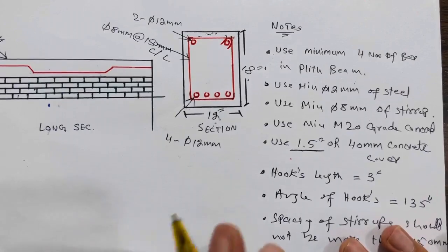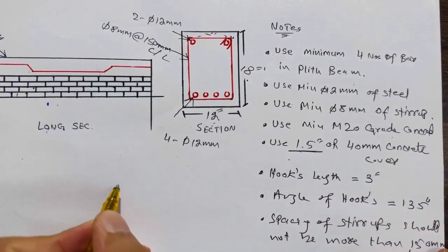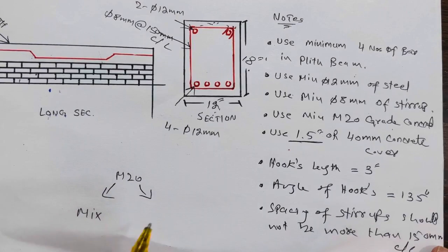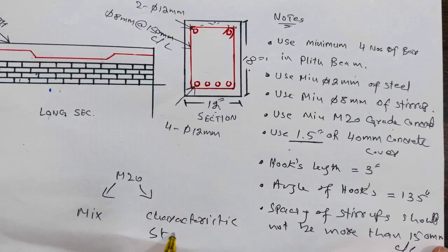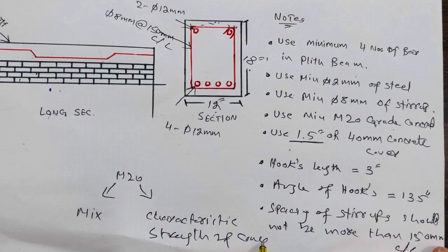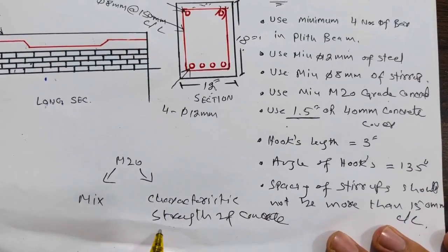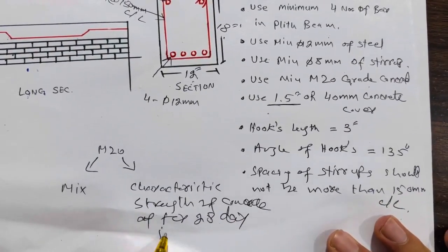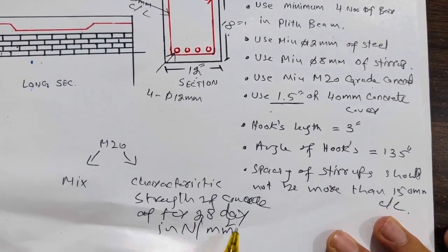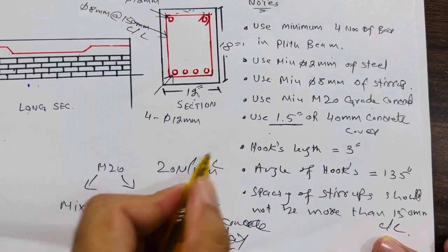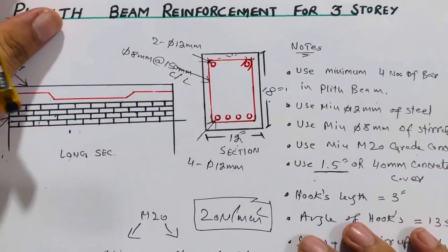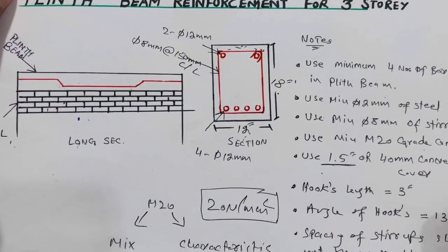Use minimum M20 grade concrete. M20 means the characteristic strength of concrete after 28 days is 20 Newton per mm squared. This is very important to know about the steel structure design, especially the detail for the concrete.